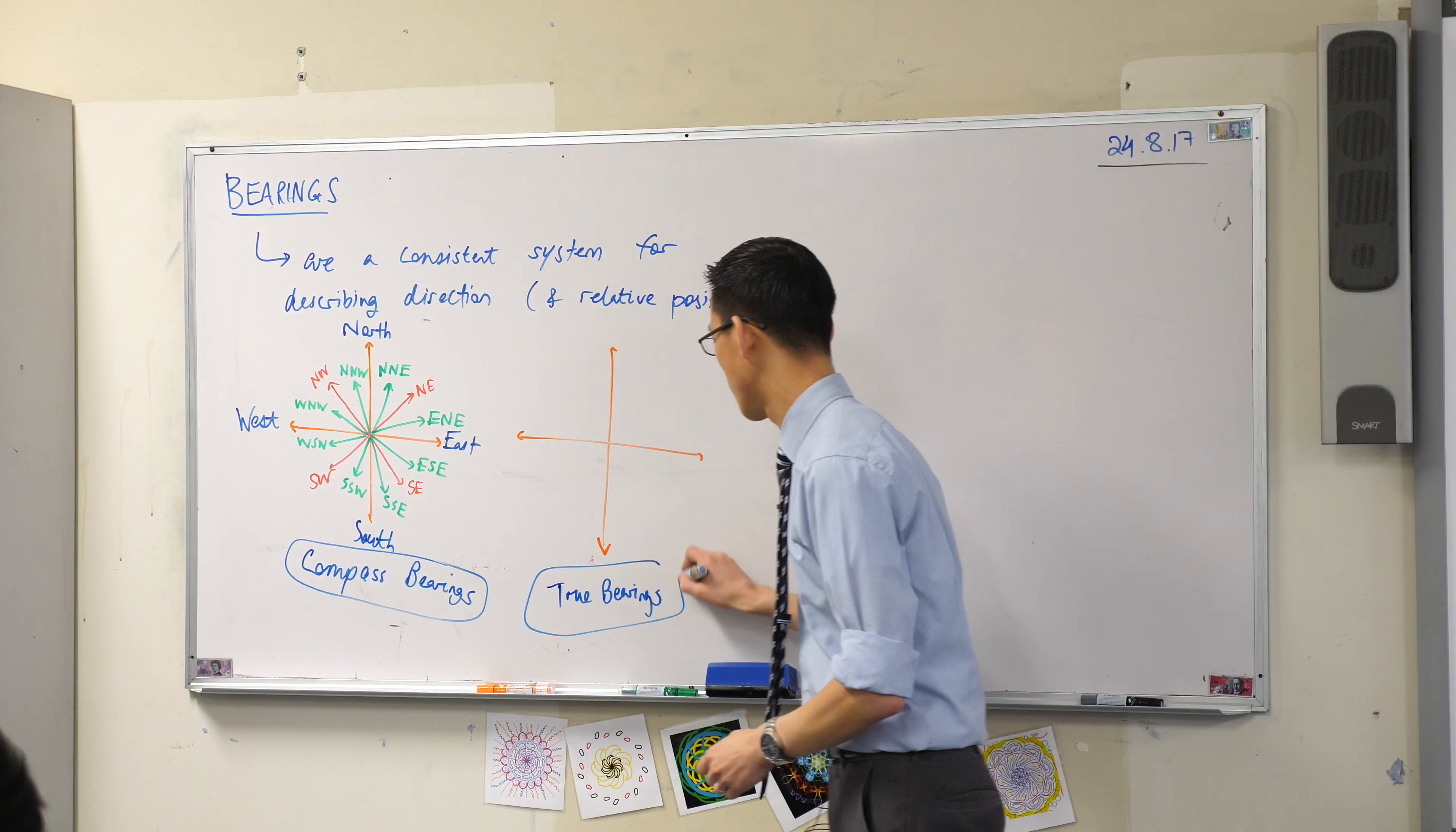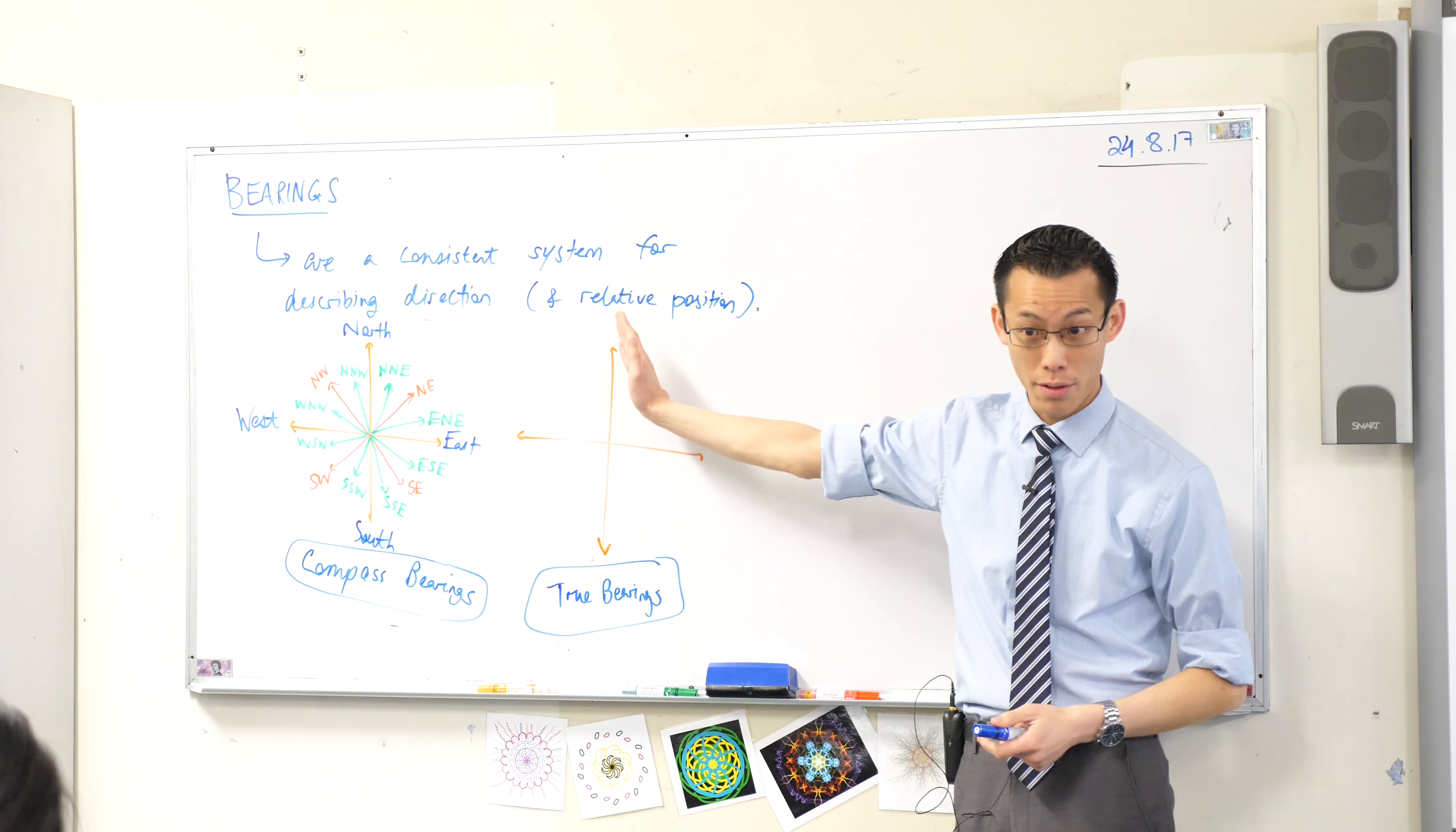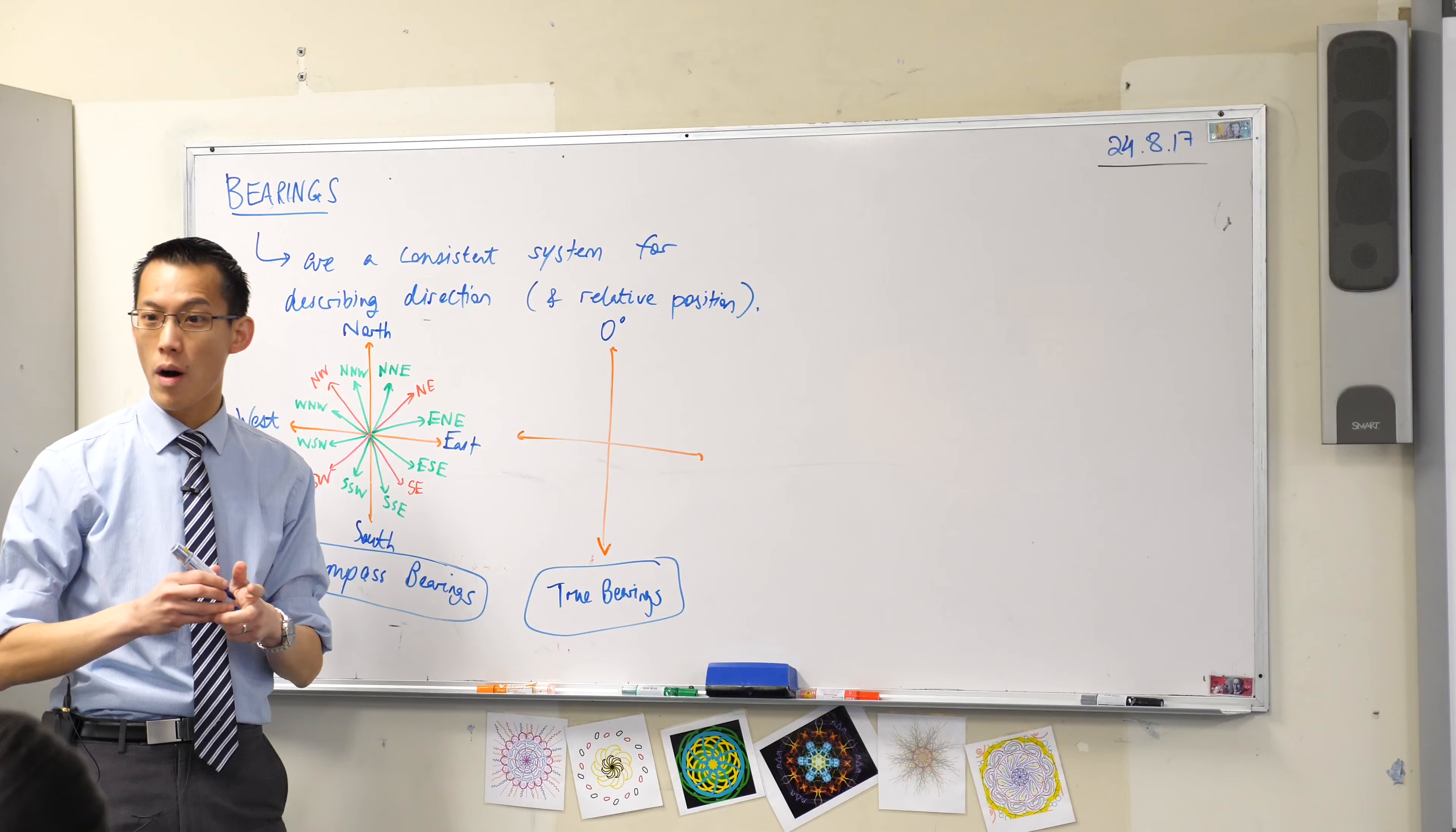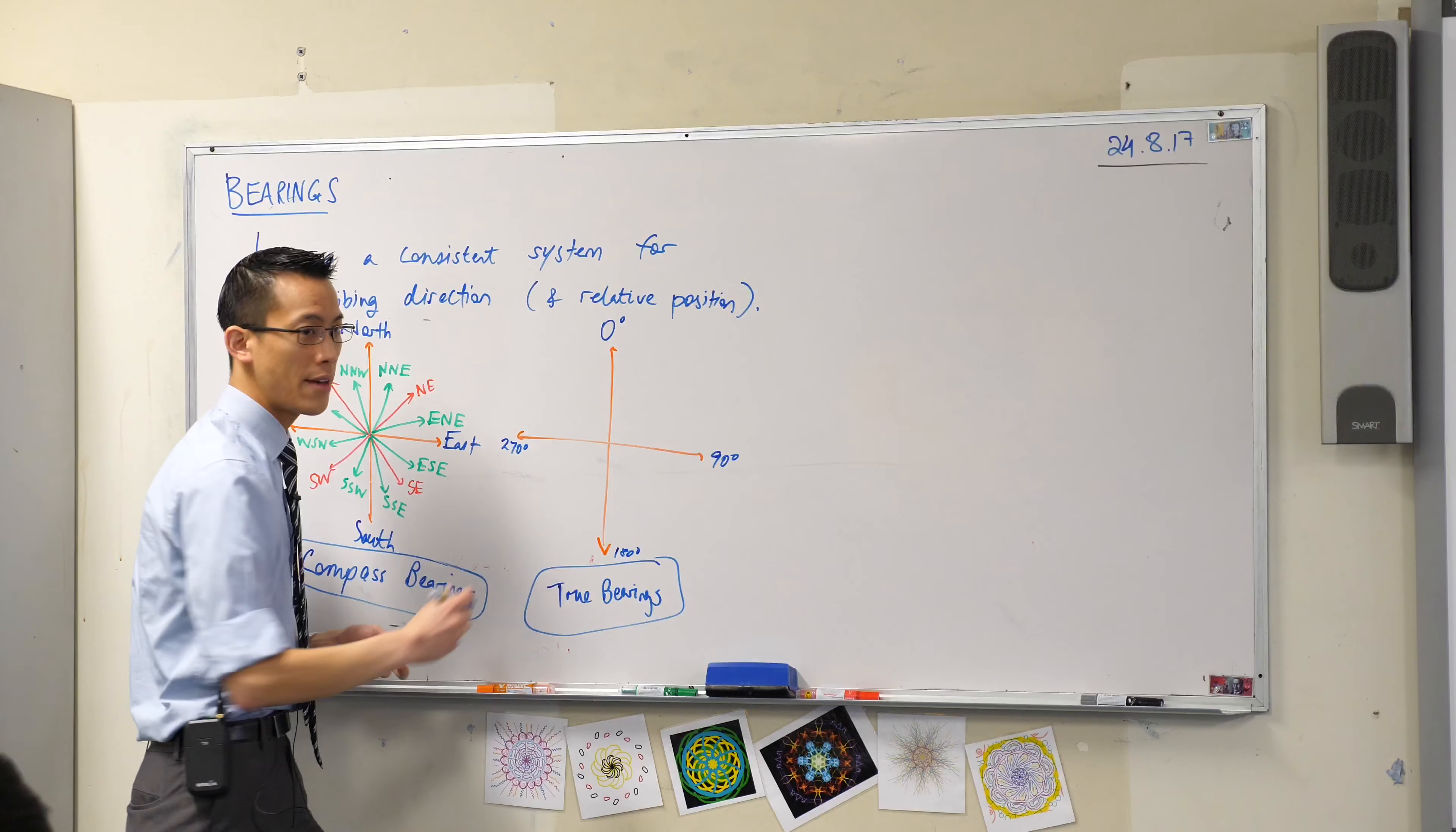True bearings. Now true bearings just say, look, forget all this north east south west business, let's just use an angle, and we measure everything starting from north. So instead of calling that north, because the starting point, I'm going to call it zero. Now therefore if I measure clockwise around, that would make this 90, this one down here would be 180, and this one over here would be 270.